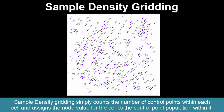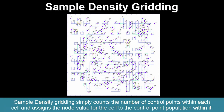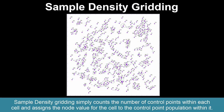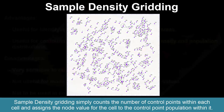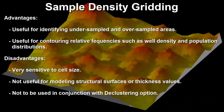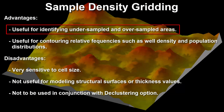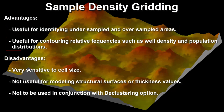Sample density gridding simply counts the number of control points within each cell and assigns the node value for the cell to the control point population within it. Sample density gridding is useful for identifying undersampled and oversampled areas.